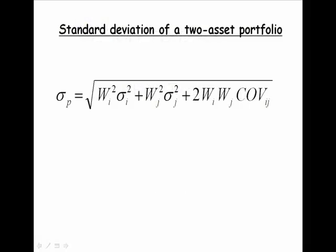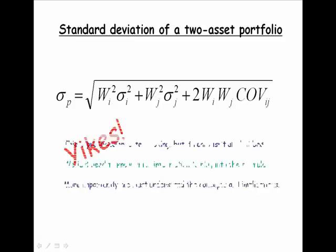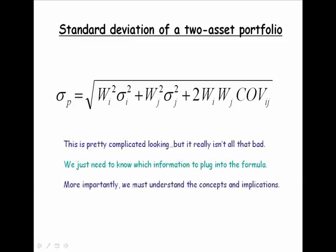Correlation and covariance is a really important part of the standard deviation of a two-asset portfolio. Whoa! That's pretty scary looking, isn't it? It's one of the meanest looking formulas you'll see, and yet it really is not all that bad. We need to know the formula and which information to plug in, but more importantly, it's crucial that you understand the concepts and implications of diversification.